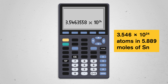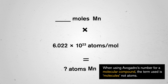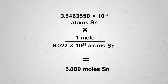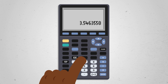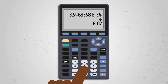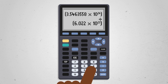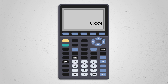We'll use the same process when working with compounds — the conversion setup is the same because Avogadro's number is universal whether we're dealing with elemental manganese or a glucose molecule. The fact that it's reversible means we can do these conversions in the opposite order if needed. We just have to be mindful when using a calculator to put parentheses around scientific notation expressions. We end up with the number we started with: 5.889 moles of tin.